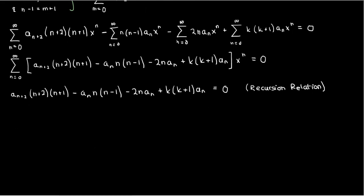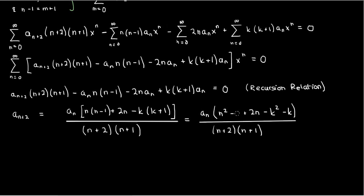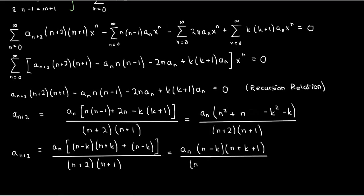Shifting the aₙ terms to the right and dividing by (n+2)(n+1) gives: a sub n+2 equals aₙ times [n(n-1) plus 2n minus k(k+1)] all over (n+2)(n+1). Expanding the numerator gives n² plus n minus k² minus k, which simplifies so that the recursion relation becomes: a sub n+2 equals aₙ times (n minus k)(n plus k plus 1) over (n+2)(n+1).